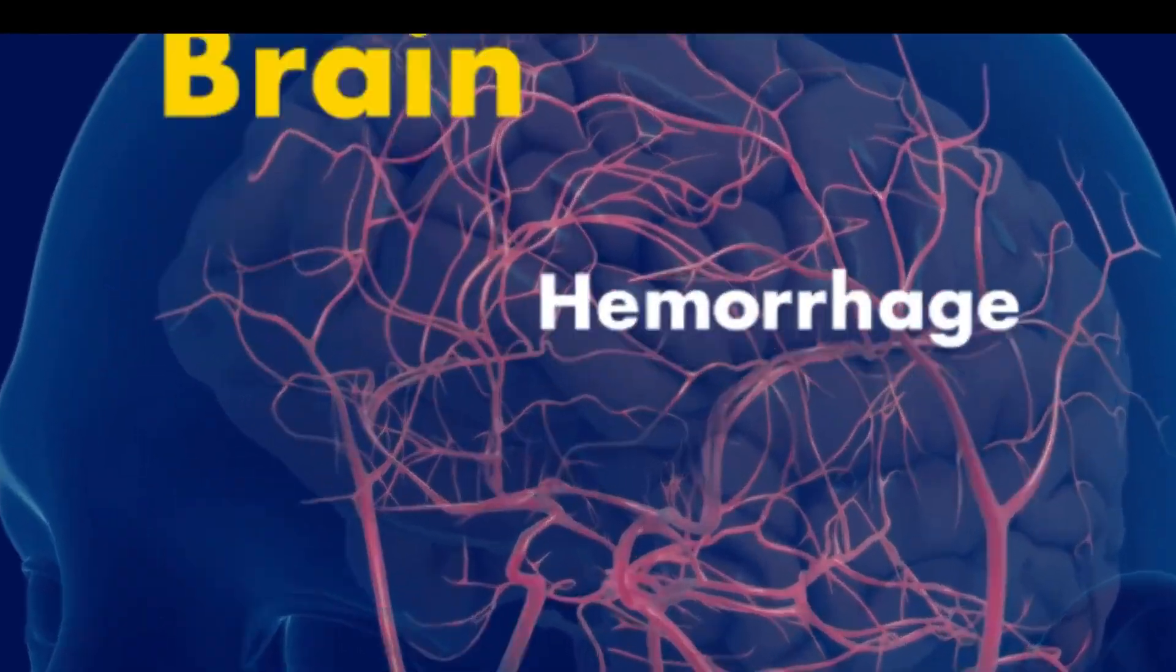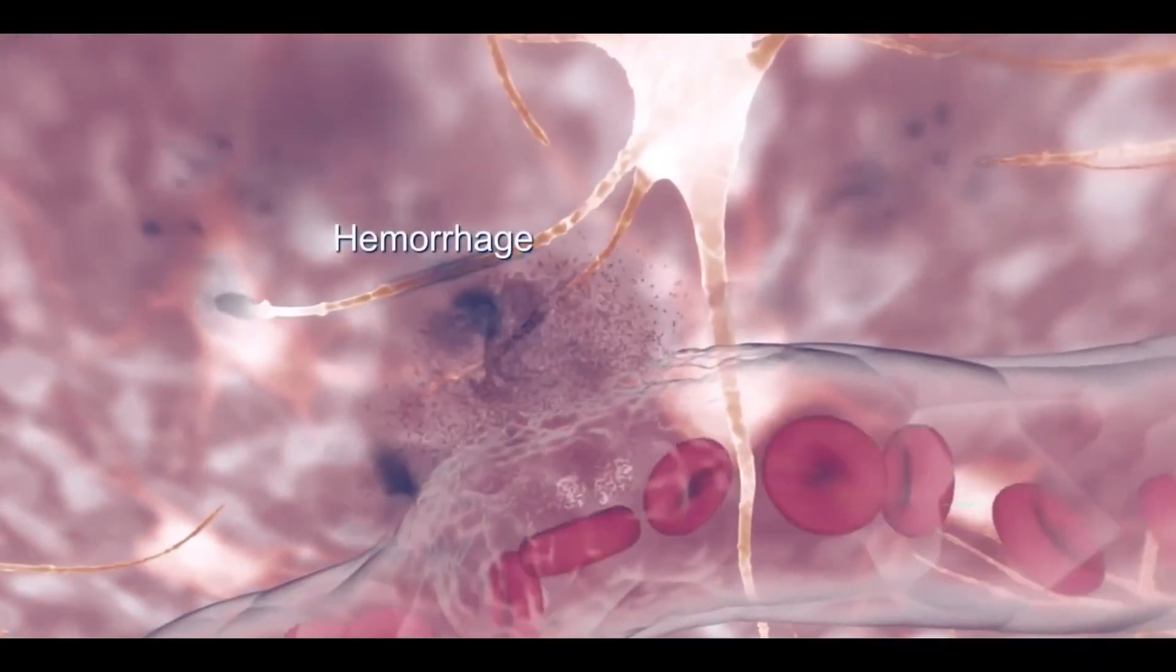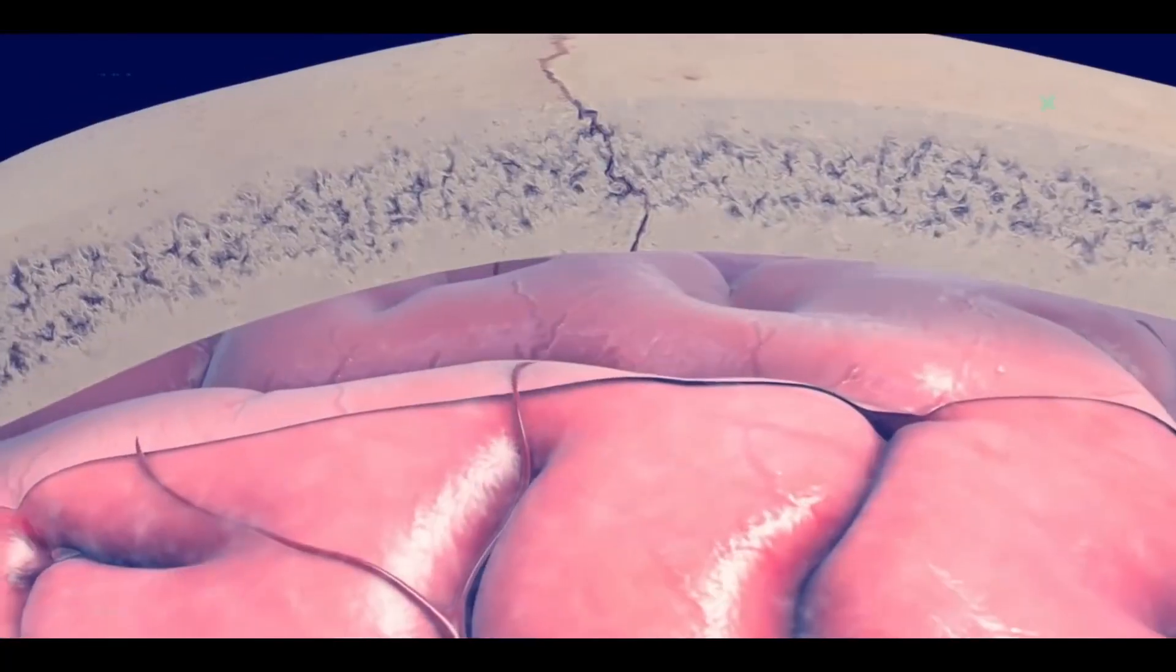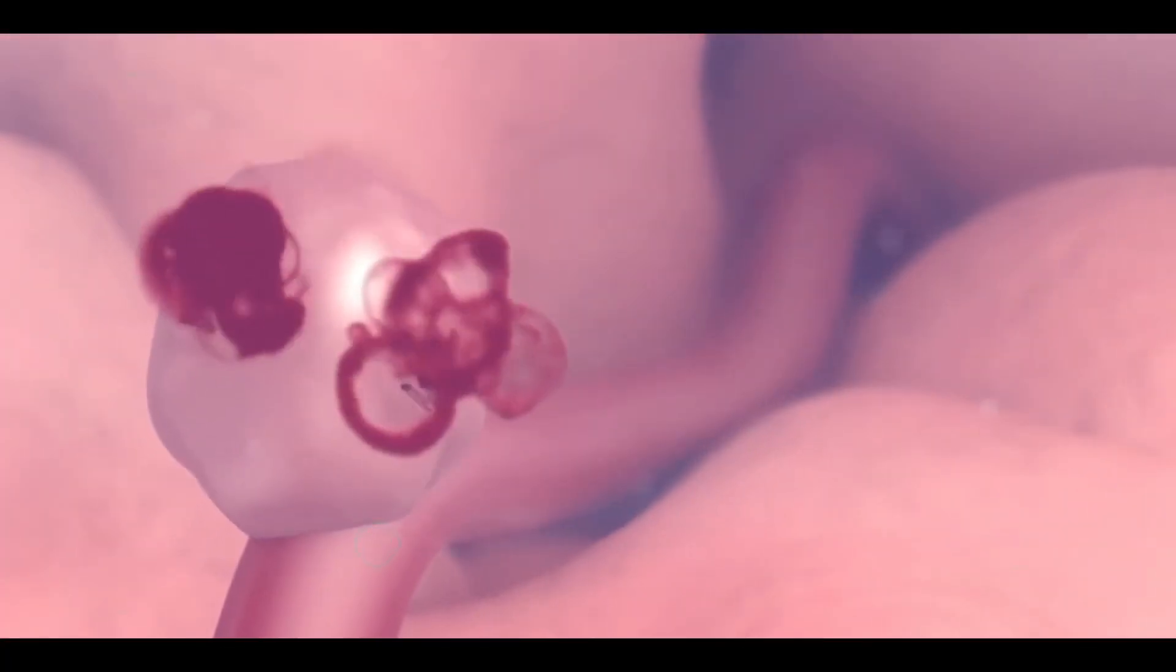Brain hemorrhage is a condition in which blood vessels inside the brain burst. This causes bleeding in the brain. The bleeding can occur either in brain tissues or in the protecting covering of the brain.